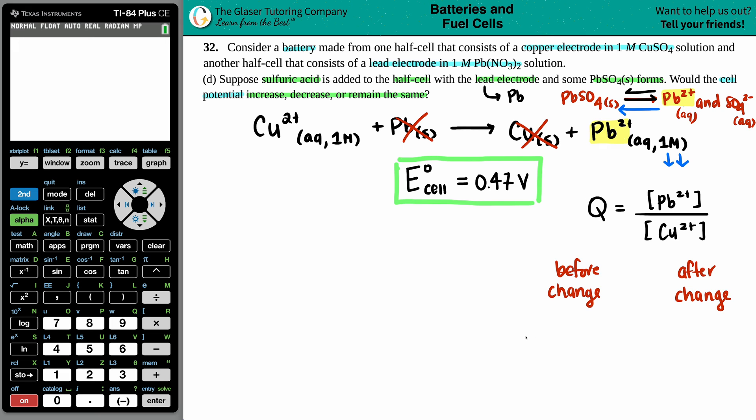the Q value was equal to just the molarity that were given. I had one molarity for the Pb2+, and I had one molarity for the Cu2+. So one divided by one, and the Q is equal to one.